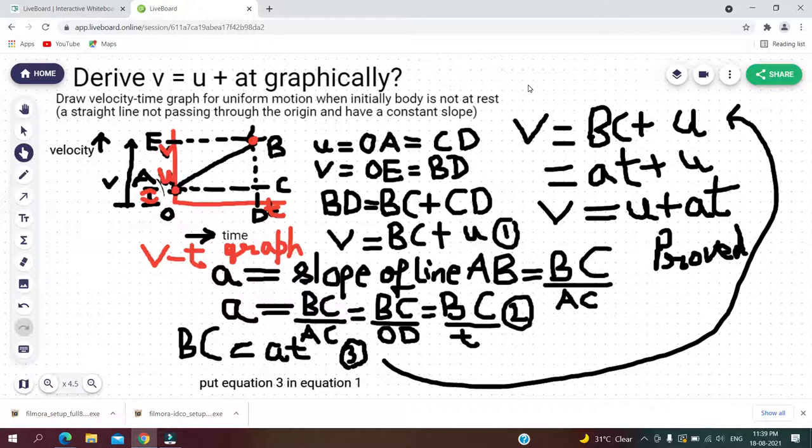So we will use the graphical method. We will draw the velocity-time graph for uniform motion when the body is initially not at rest.